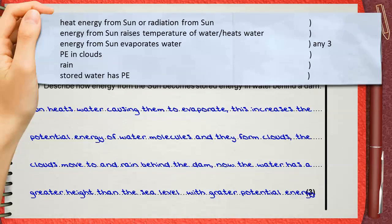Mentioning that heat energy is from the Sun, or radiation from the Sun. This is one mark. Mentioning that this energy of the Sun raises temperature of water or heats water. This is another mark. Energy from Sun evaporates water. This can give you one mark.